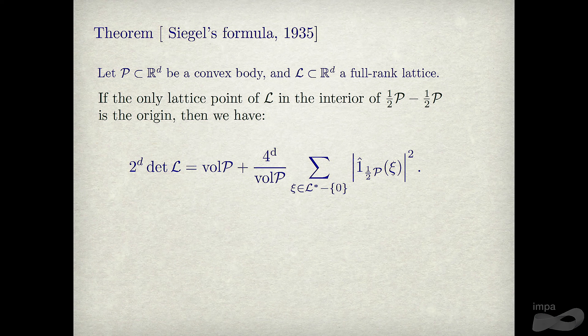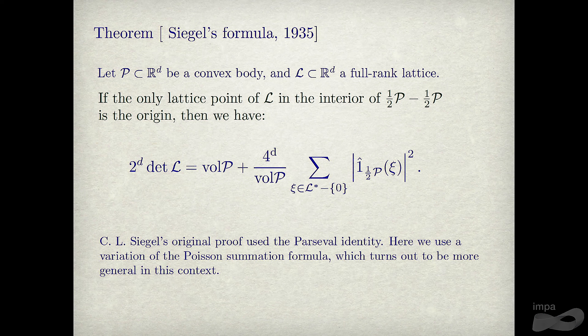We want to motivate this by introducing more general identities than Siegel's and deriving inequalities from them. Going backwards from Siegel implies Minkowski, we can ask: can we characterize the bodies which give the equality case? Classically, those bodies are characterized by tiling and multi-tiling of space by translations of the body.